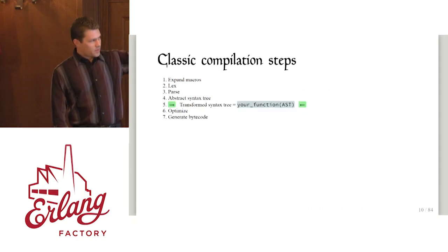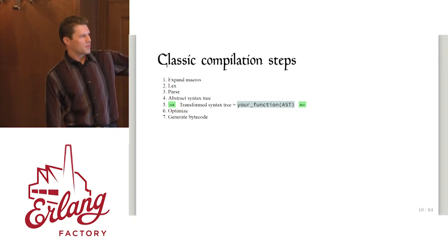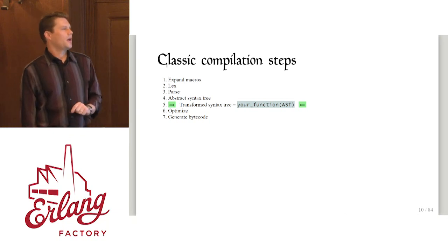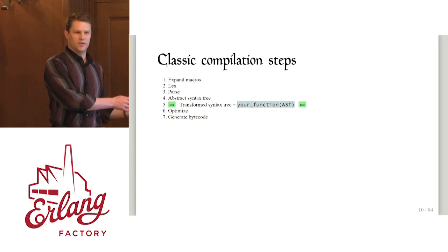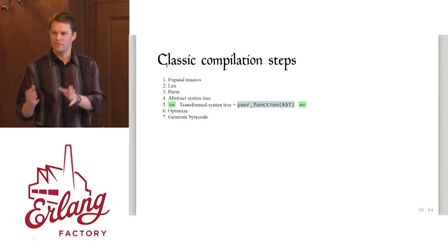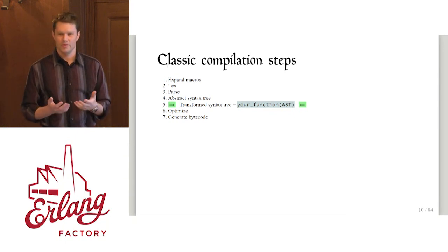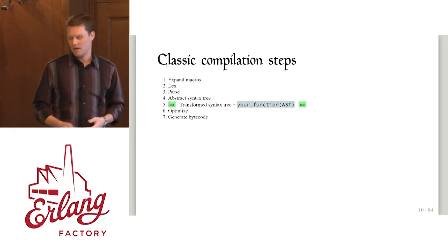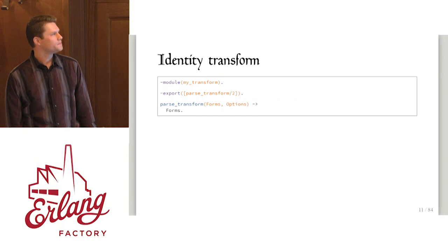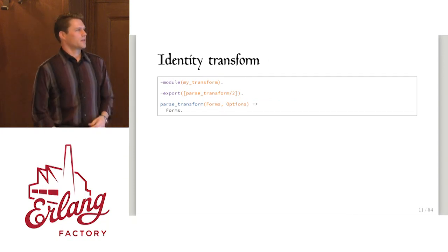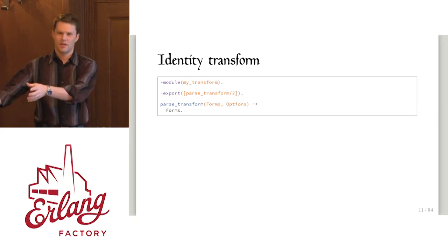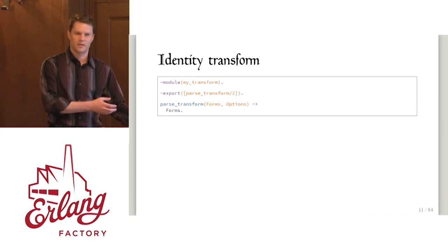This is what the parse transform does. We're going to insert a little step right in here after we generate the abstract syntax tree. We take that entire syntax tree for a single module, pass it off to your user function. You can do whatever you want with it — including completely clobber it — and then return it back to the compiler. The compiler takes that and continues on through the process. This is what an identity transform looks like — it does no transformation, it just says whatever AST the compiler gives me, I'll give it right back.